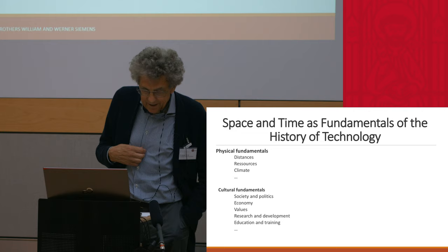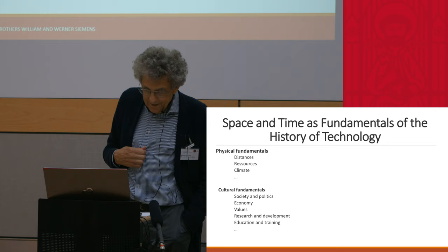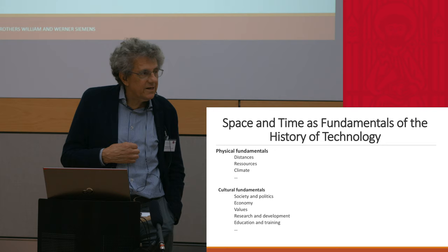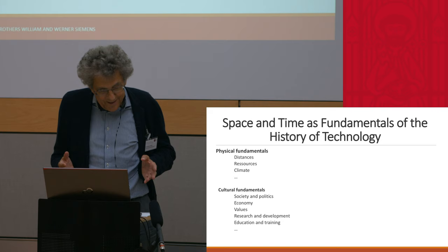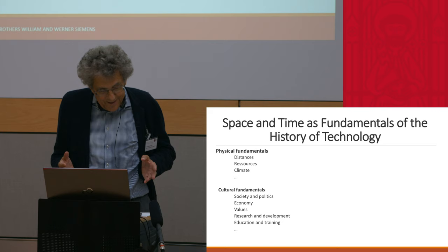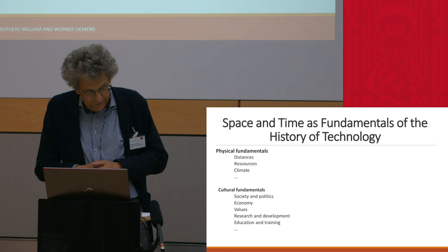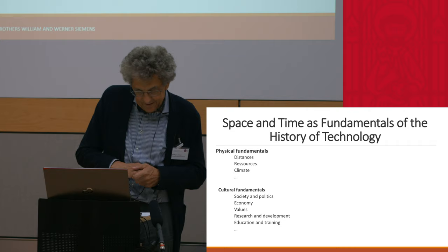The third point is climate. I would like to refer to the textile and papermaking industry, which need a particular temperature and a particular humidity. Today they produce this by artificial means. These are some examples that in technological developments, physical constraints and opportunities are also important.